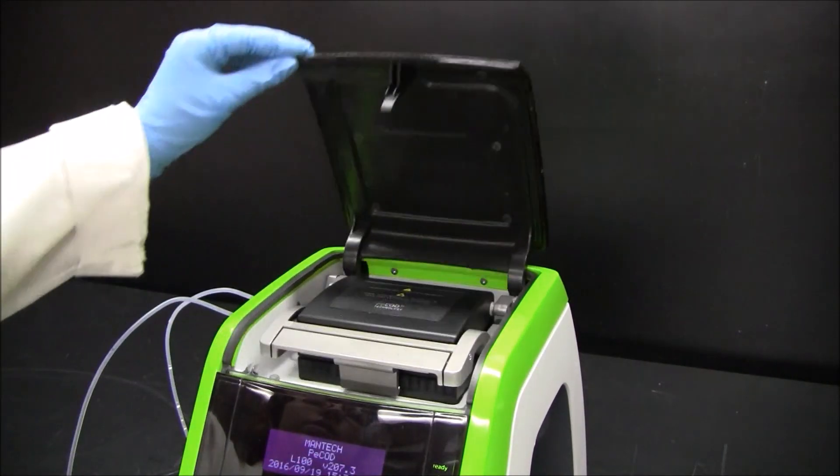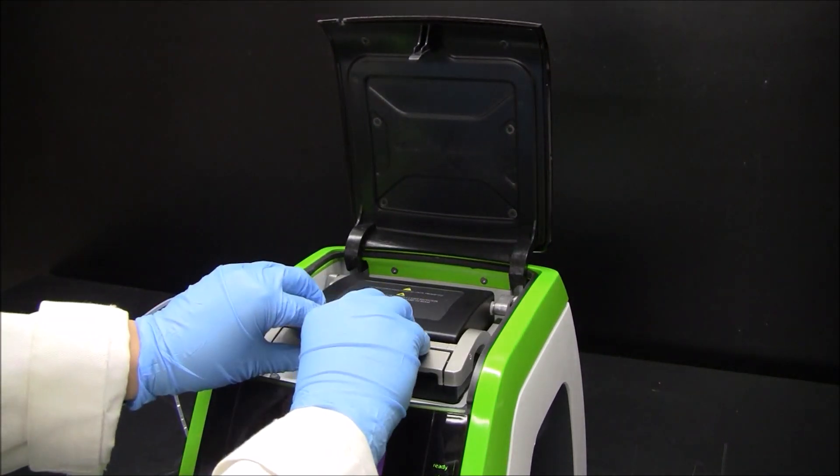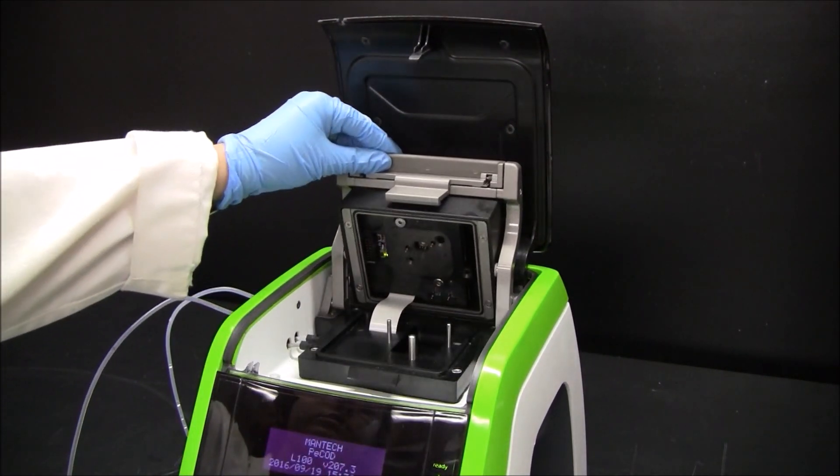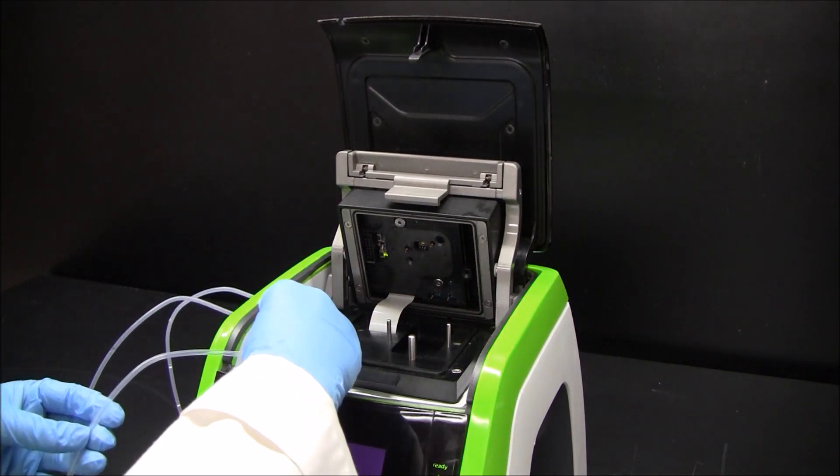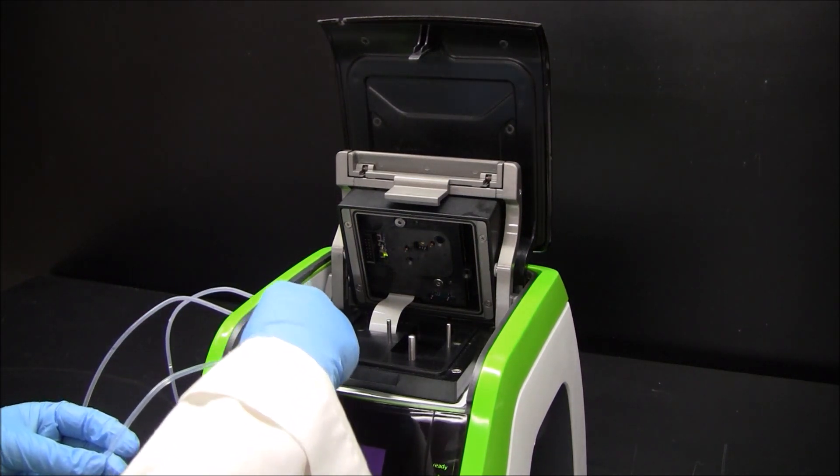Open the L100 lid, then open the analyzer head. Attach the final tube to port A. This will be used for the calibrant and the sample.